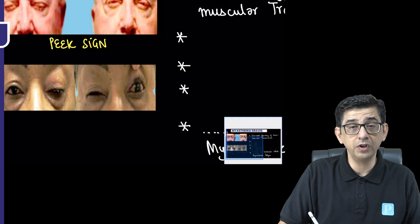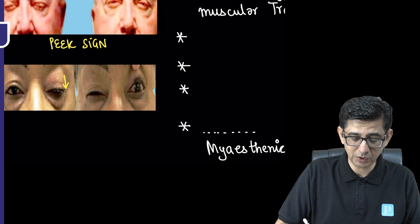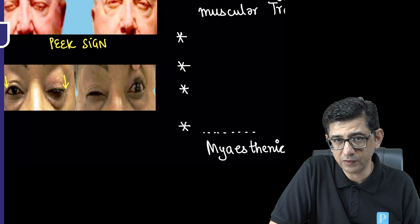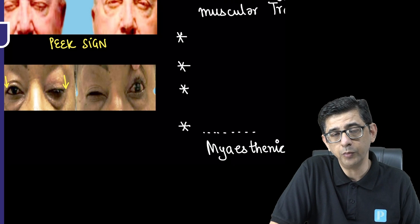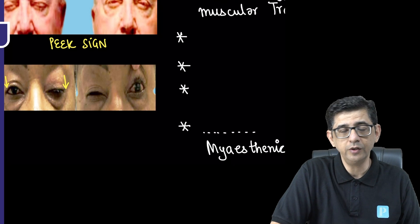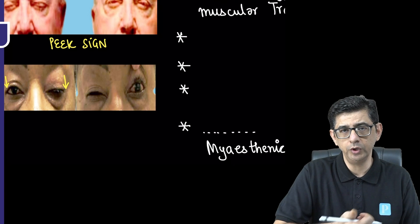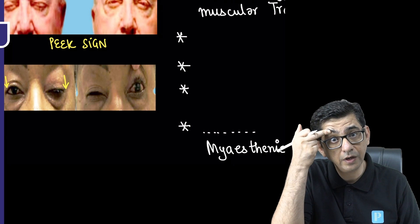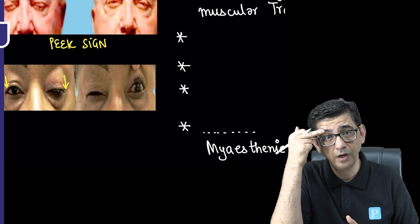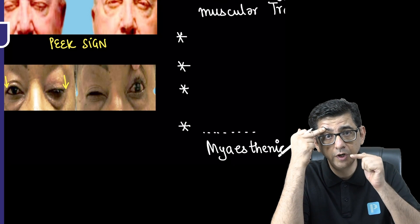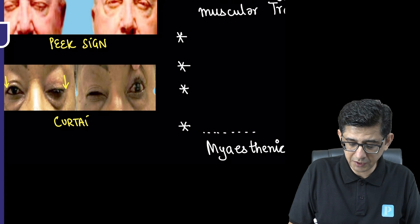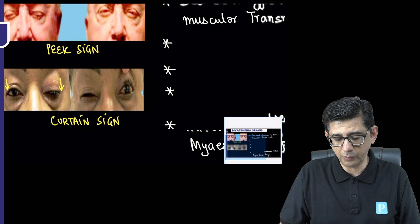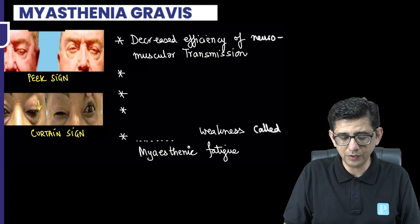For the second sign, notice the presence of ptosis. The ptosis seen in Myasthenia Gravis is always asymmetrical, and it is this asymmetrical ptosis that explains the development of diplopia. On whichever eye shows predominant ptosis, you use your thumb or finger to elevate that eye, and you will notice that the contralateral eye falls down like a curtain. This is the classical Curtain Sign seen in patients of Myasthenia Gravis.